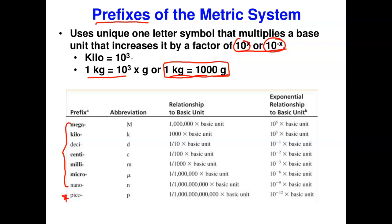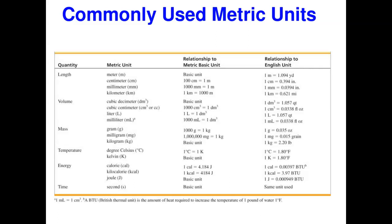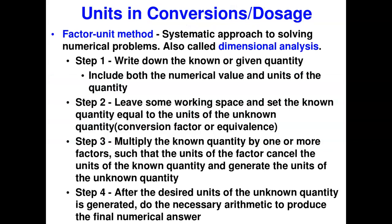It is always easy to convert from one unit to another, whether metric or English. A conversion table shows common relationships for quantities like length, volume, mass, temperature, energy, and time. The metric system entries include meter, centimeter, and millimeter, with each derived unit having an attachment to the base. This table will be used for calculations.